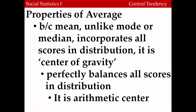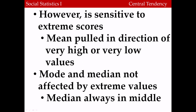What are some of the properties of the mean? Because the mean, unlike the mode or the median, incorporates all the scores in the distribution, it's said to be the center of gravity of the distribution — it perfectly balances all the scores and is the exact arithmetic center. However, it's very sensitive to extreme values, that is, values that are further apart from the rest of the data. The mean is pulled in the direction of very low or very high value cases. The mode and median aren't affected by extreme values, especially the median, which is always in the middle.